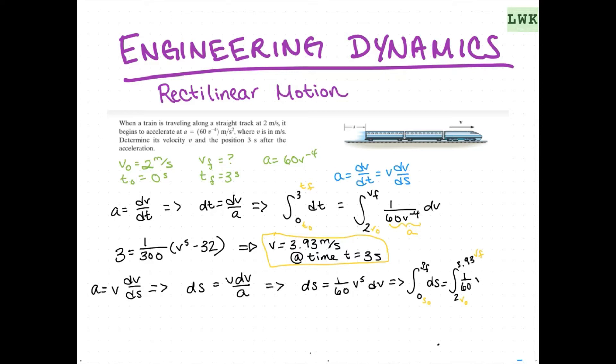Times v to the 5th dv. So, that is just going to work out to be s equals 1 over 60 times (v to the 6th over 6) between 2 and 3.93. And just, again, calculus. And by magic, we get s equals 9.9 meters.